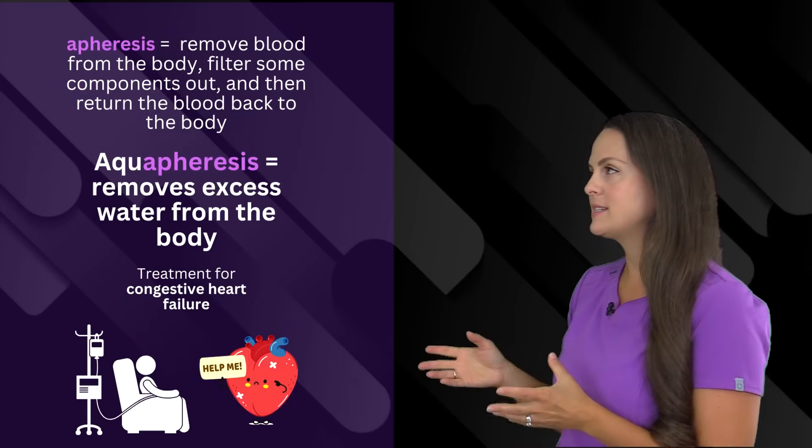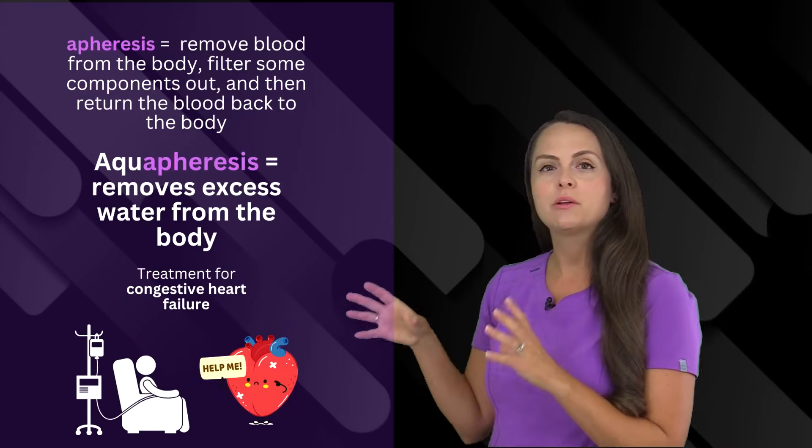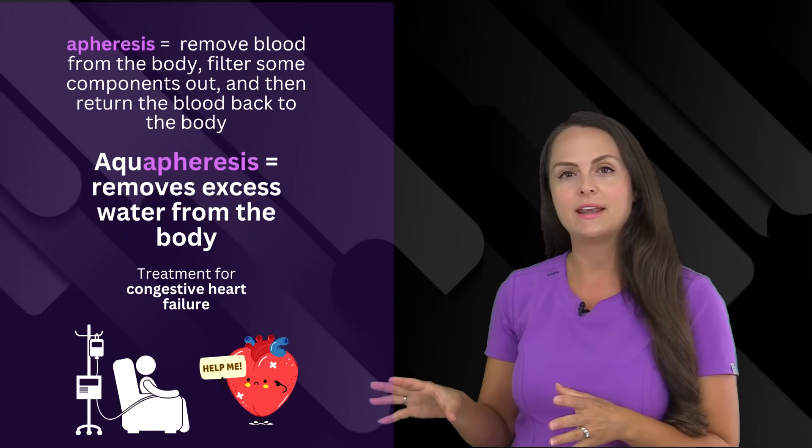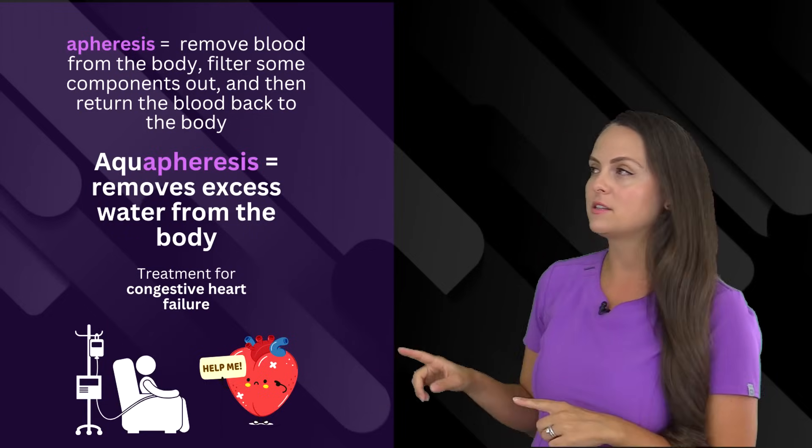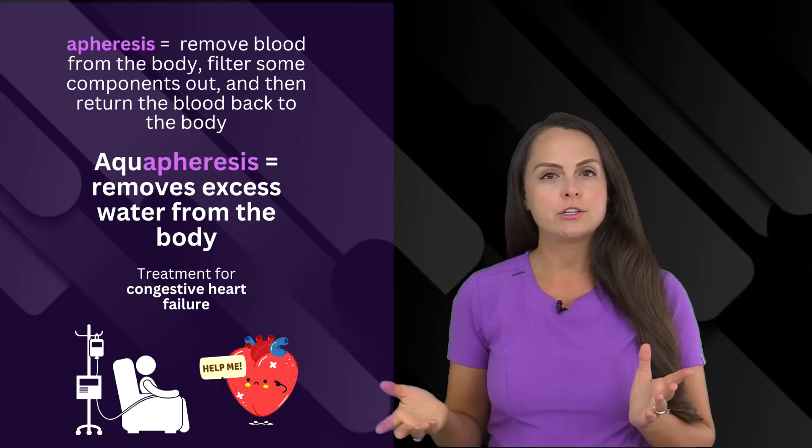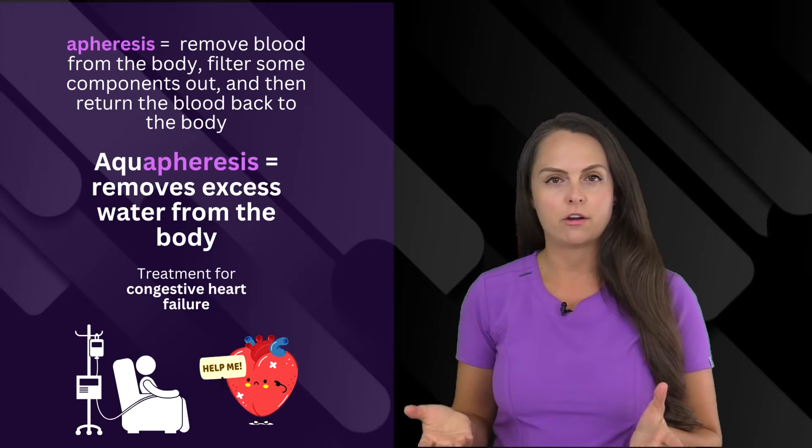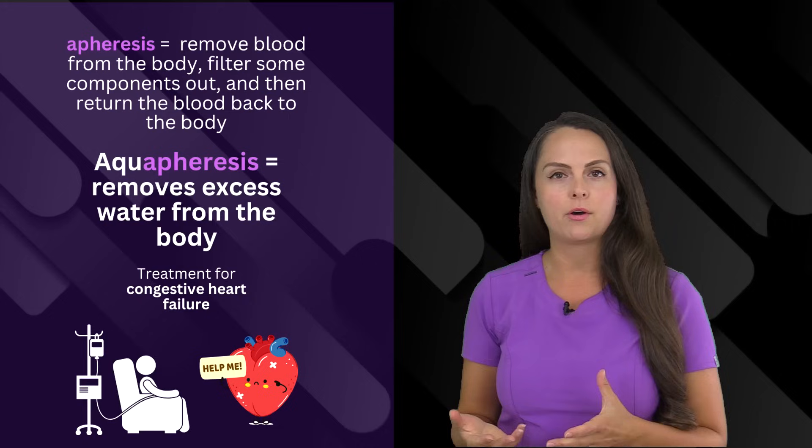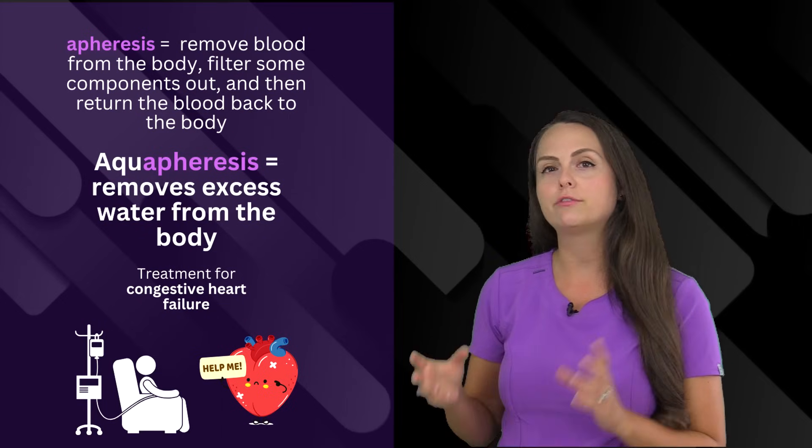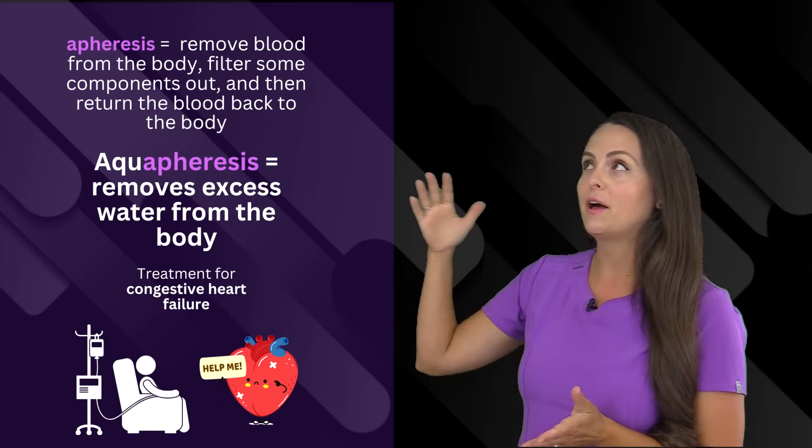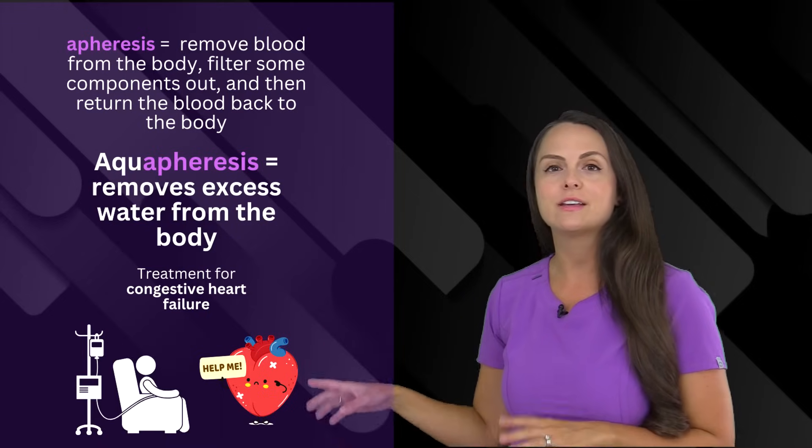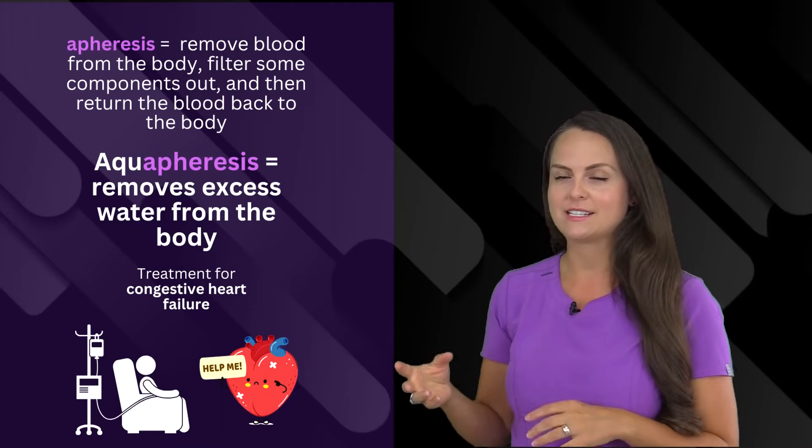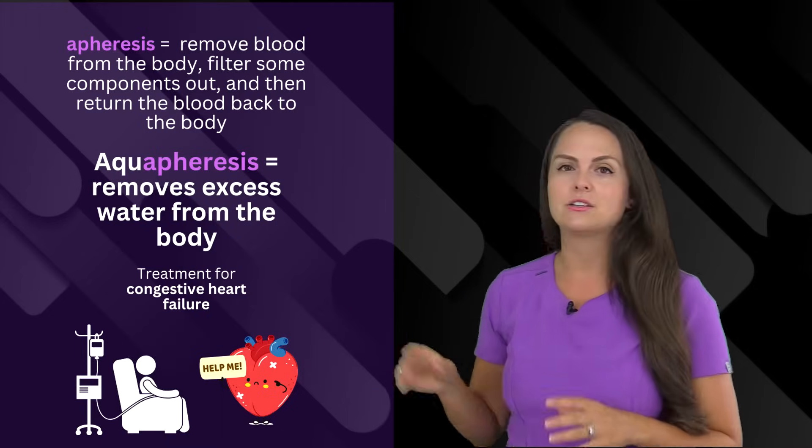Then we have apheresis. This means to remove blood from the body, filter out components of that blood, then send that blood back to the body. And there's a procedure we can do for patients who have congestive heart failure. This is where their heart is really weak. They have fluid volume overload in the body. And that procedure is called aquapheresis. So with this, we remove blood from the body, filter out a component, which is water, hence why we call it aquapheresis, and then send that blood back to the body.